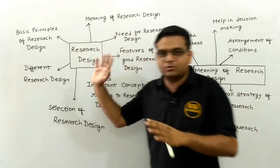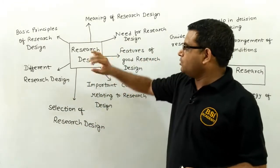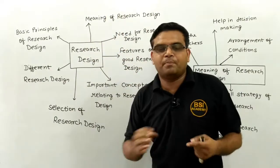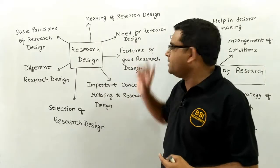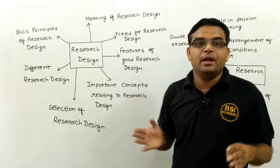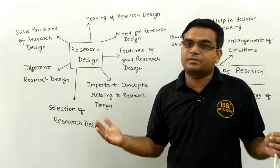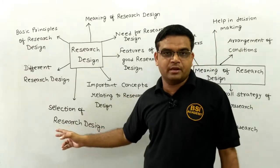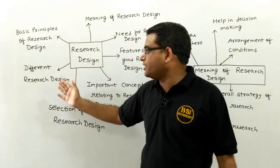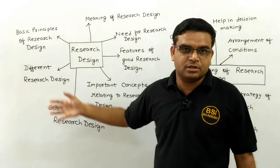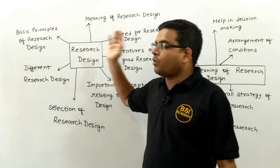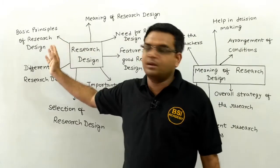So let me revise all the points I covered. This entire research design includes: the meaning of research design, the purpose and need for research design, what are the important characteristics and good features of research design, the important concepts and points relating to research design, and what are the different types of criteria on the basis of which we select our research design. Then what are the different types of research design available, different types of literature review available, and what are the different types of basic principles available to complete our research.